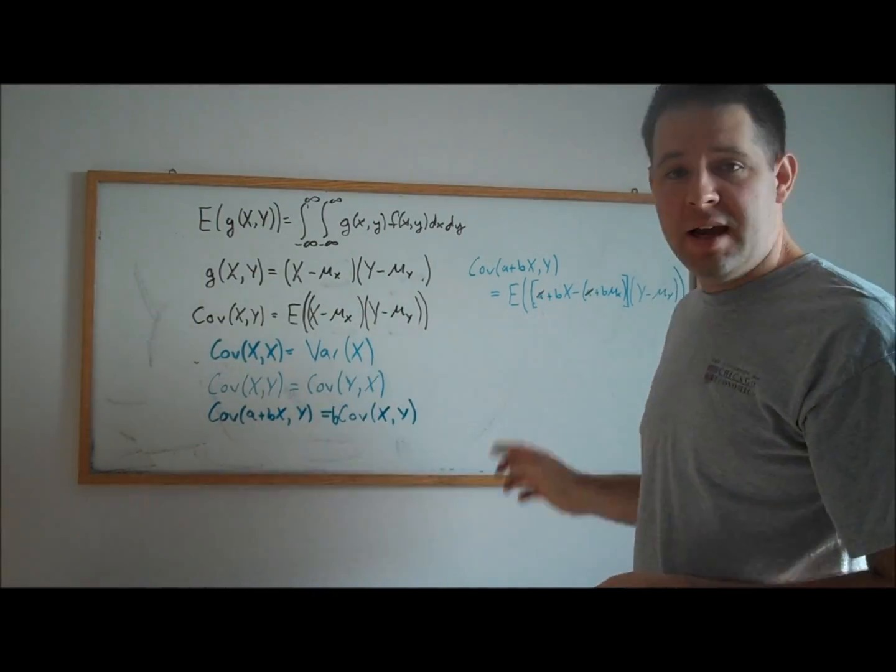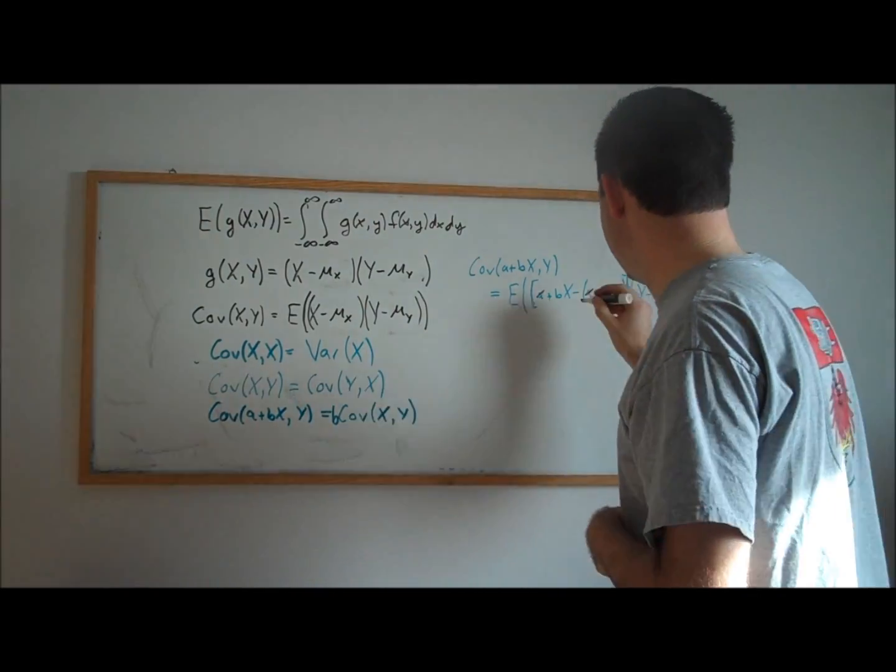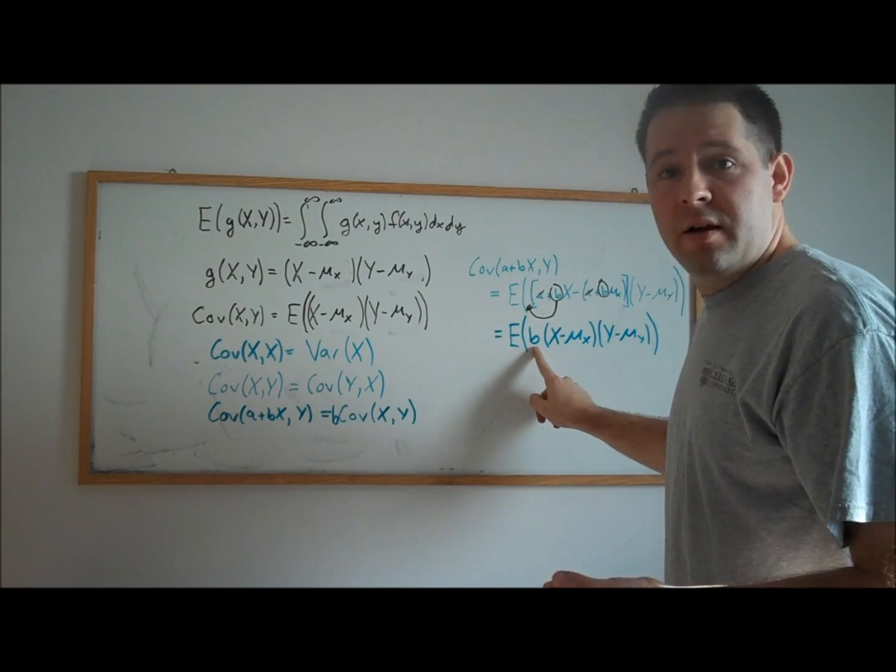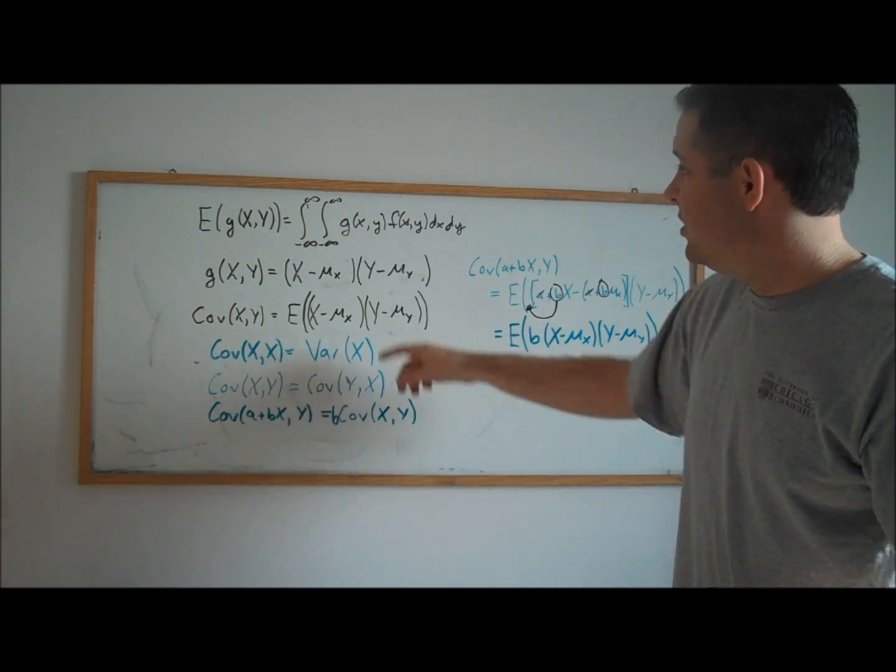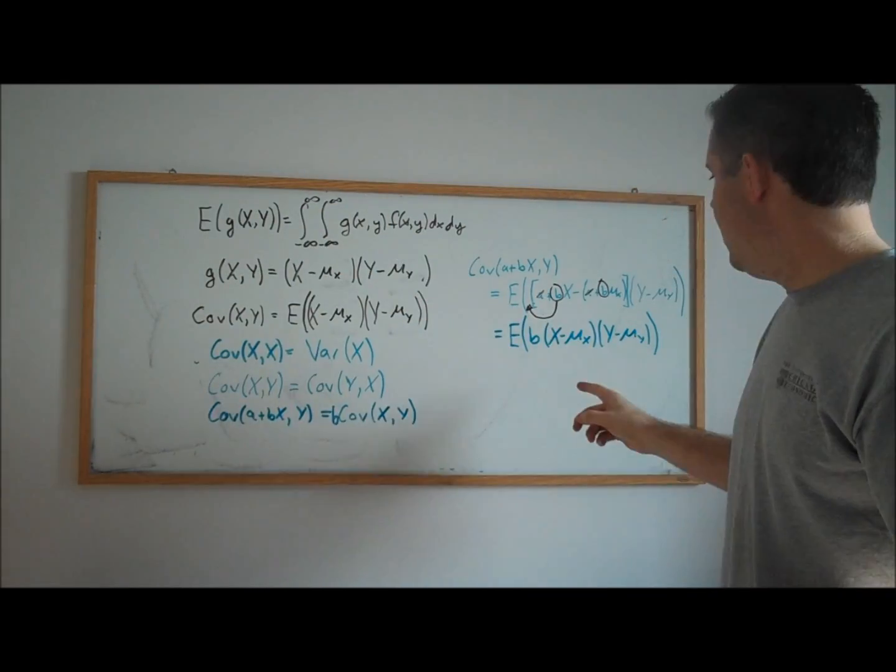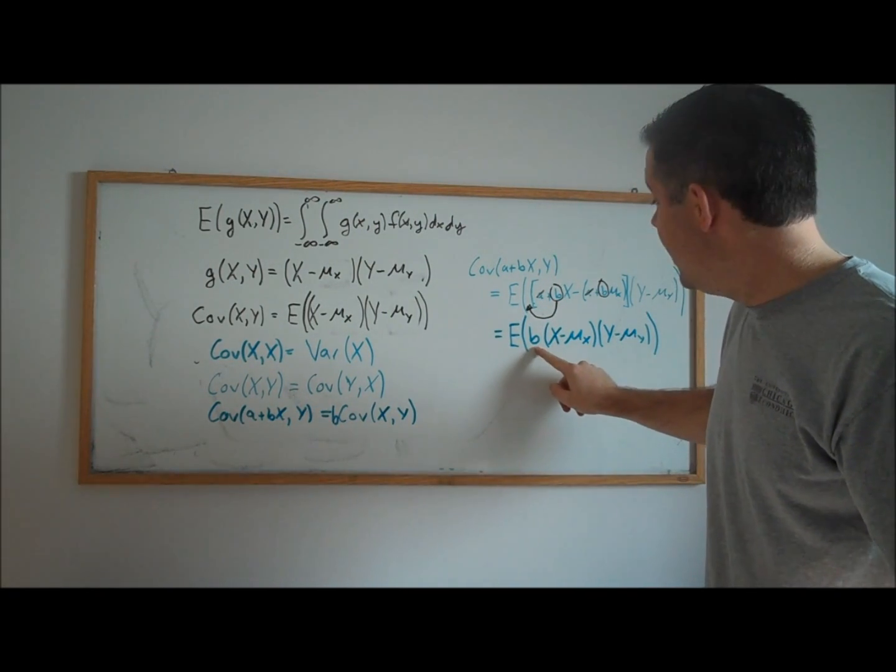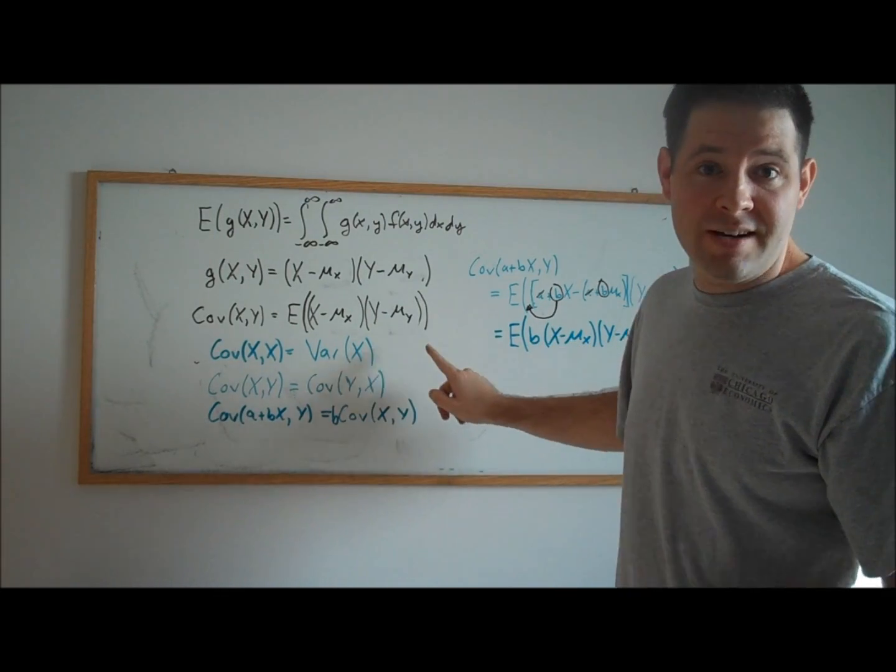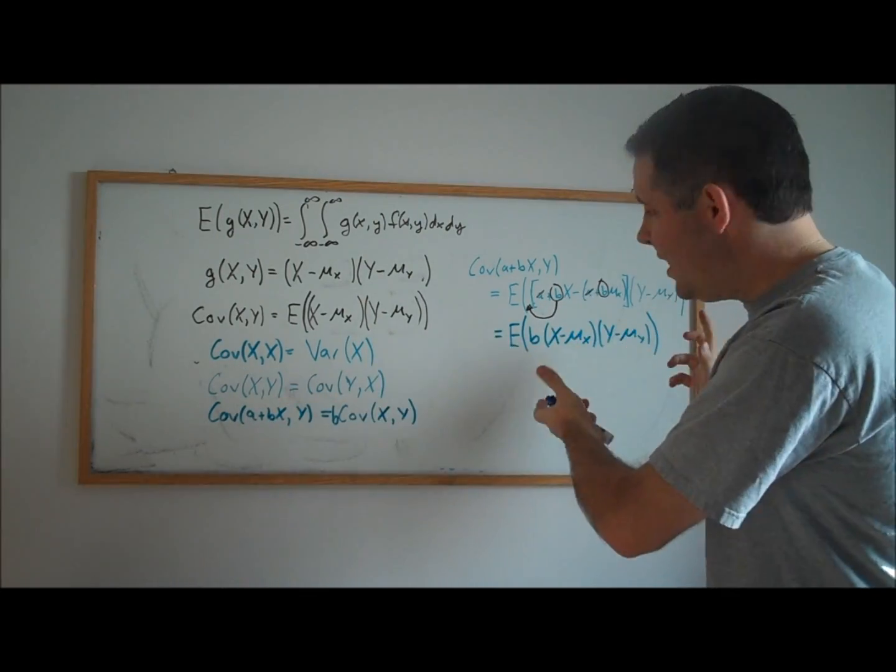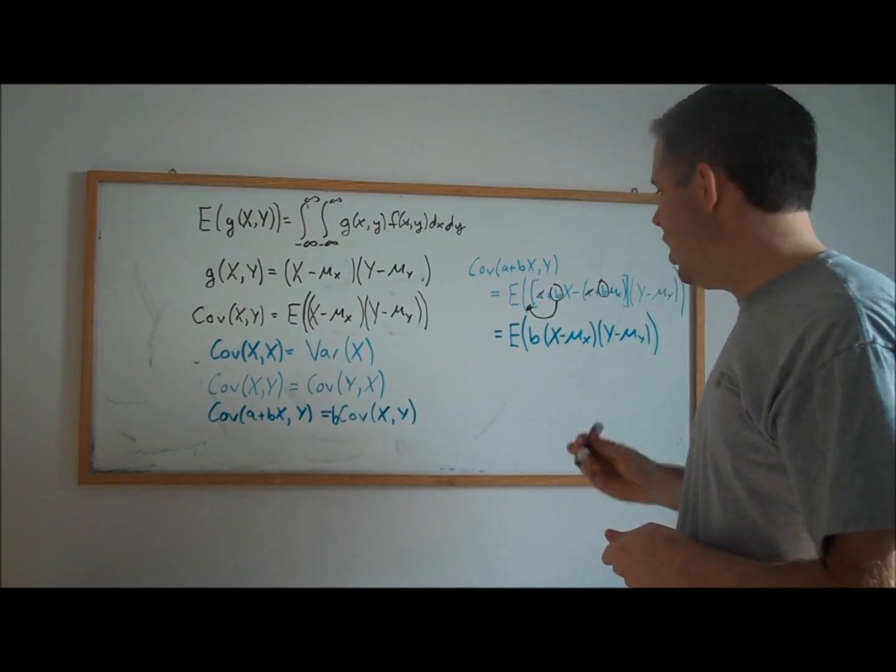We can bring the b outside of those remaining terms. With this expectation, we have a double integral integrating over X and Y. b doesn't depend on either X or Y, so we can bring it outside of that double integral, and what remains is the covariance of X and Y.